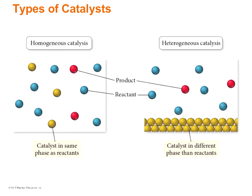Here are a couple of visuals for these two types of catalysts. On the left, we have a homogeneous catalyst, shown in yellow, which is in the same phase as the reactants in blue, and the products are red. On the right-hand side, we have a heterogeneous catalyst — you can see the catalyst is a solid, whereas the reactants and products are gases.